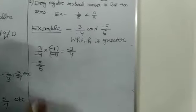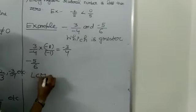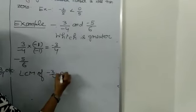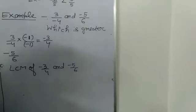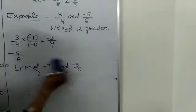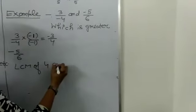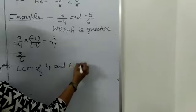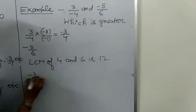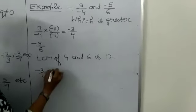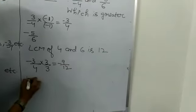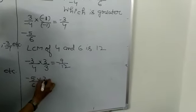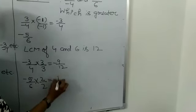The next rational number is minus 5 upon 6. Now we find the LCM of the denominators. LCM of 4 and 6 is 12. So minus 3 upon 4 multiplied by 3 upon 3 gives minus 9 upon 12, and minus 5 upon 6 multiplied by 2 upon 2 gives minus 10 upon 12.